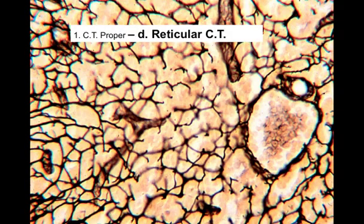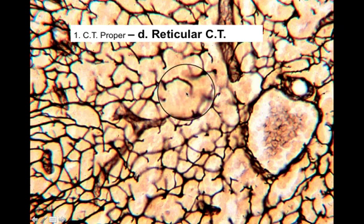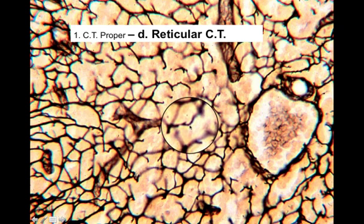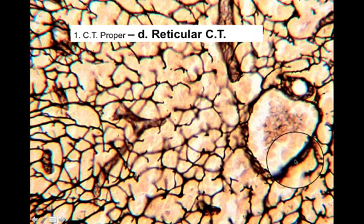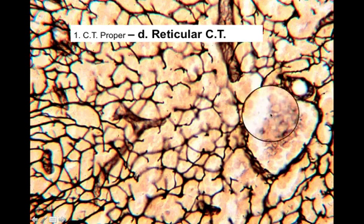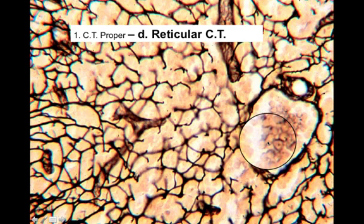Here's an image of reticular connective tissue, and this is a cross-section taken through a gland. The reticular fibers are these networks of dark fibers that you see here. The beige color in between is probably the cells of the gland. This cross-section was taken through an endocrine gland, so you will find reticular connective tissue supporting endocrine glands. This is neat — here's a cross-section through a blood vessel with some red blood cells trapped inside.